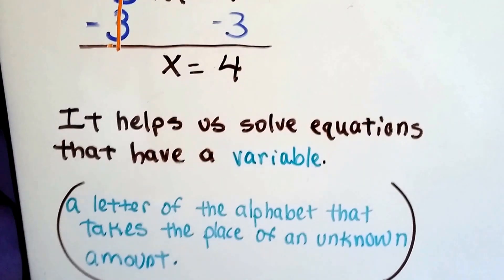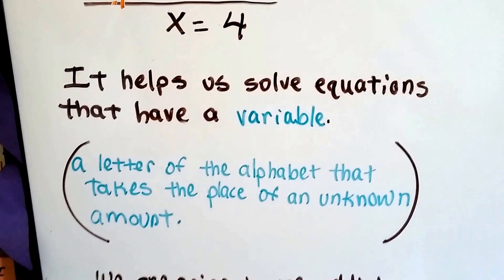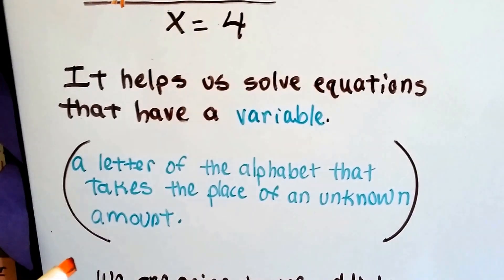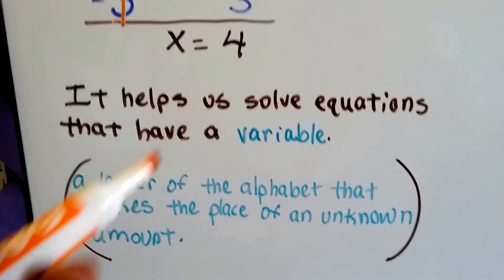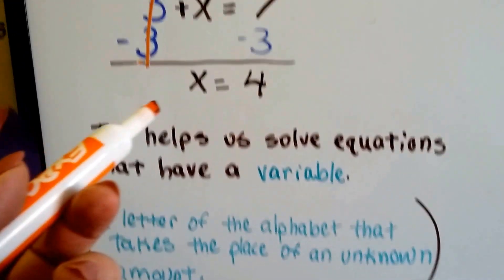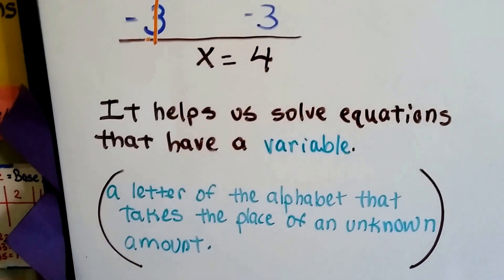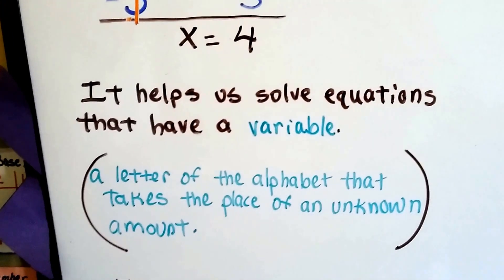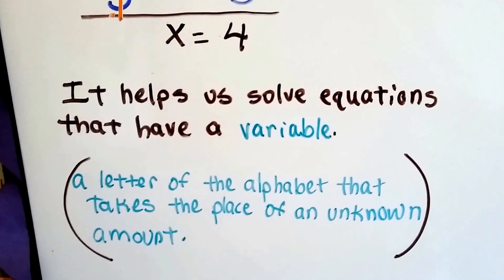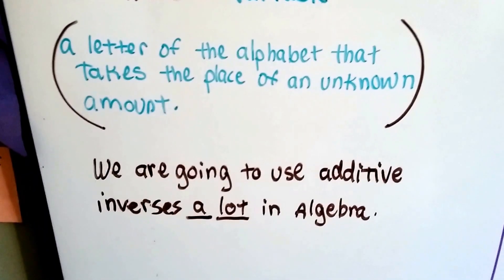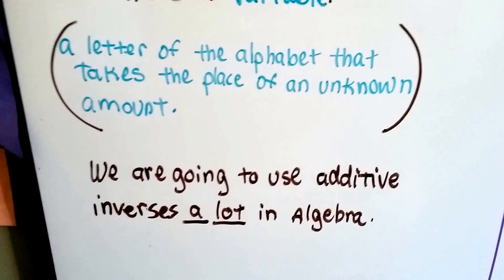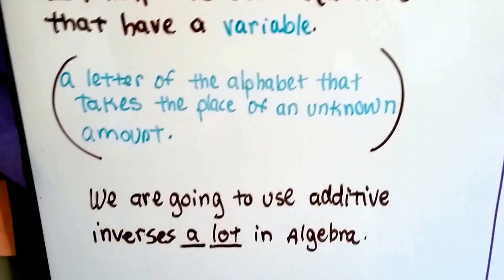It helps us solve equations that have a variable. Remember what a variable is from last year? It's a letter of the alphabet that takes the place of an unknown amount. And we could use a blank, we could just say 3 plus blank equals 7. But what's cool about using variables is we can multiply and divide and add and subtract them. You can't do that to a blank, can you? So we're going to use additive inverses a lot in algebra. And you're going to come to love them.